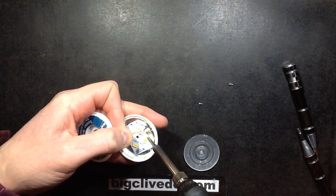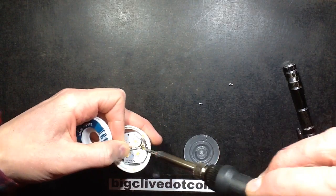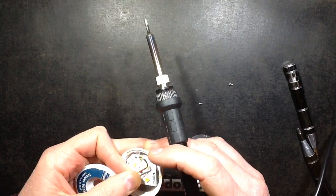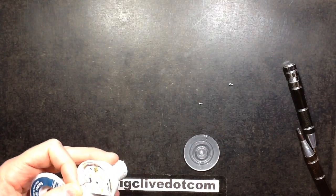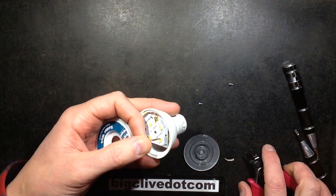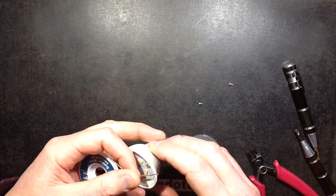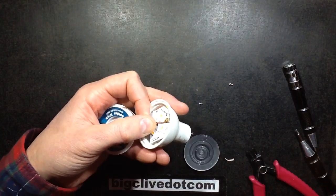I still tend to go for the desoldering wick as the first choice for desoldering things. It's a copper braid with flux on it, and when you apply it to solder and heat it, it just basically acts like a sponge that sucks the solder up into the braid. It's quite effective. It usually leaves pads very clean.